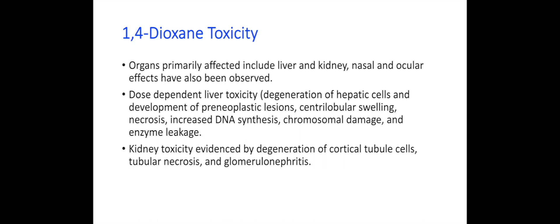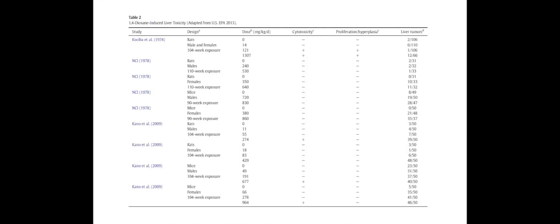Primarily, liver and kidney are affected by 1,4-dioxane, with nasal and other effects from inhalation exposure. Liver toxicity is dose-dependent, involving hepatic lesions, pre-neoplastic lesions, centrilobular swelling and necrosis, increased DNA synthesis, chromosomal damage, and enzyme leakage. Kidney toxicity is evidenced by degeneration of cortical tubule cells, tubular necrosis, and glomerular nephritis. This is a summary of studies on liver toxicity, carcinogenicity, and cytotoxicity.